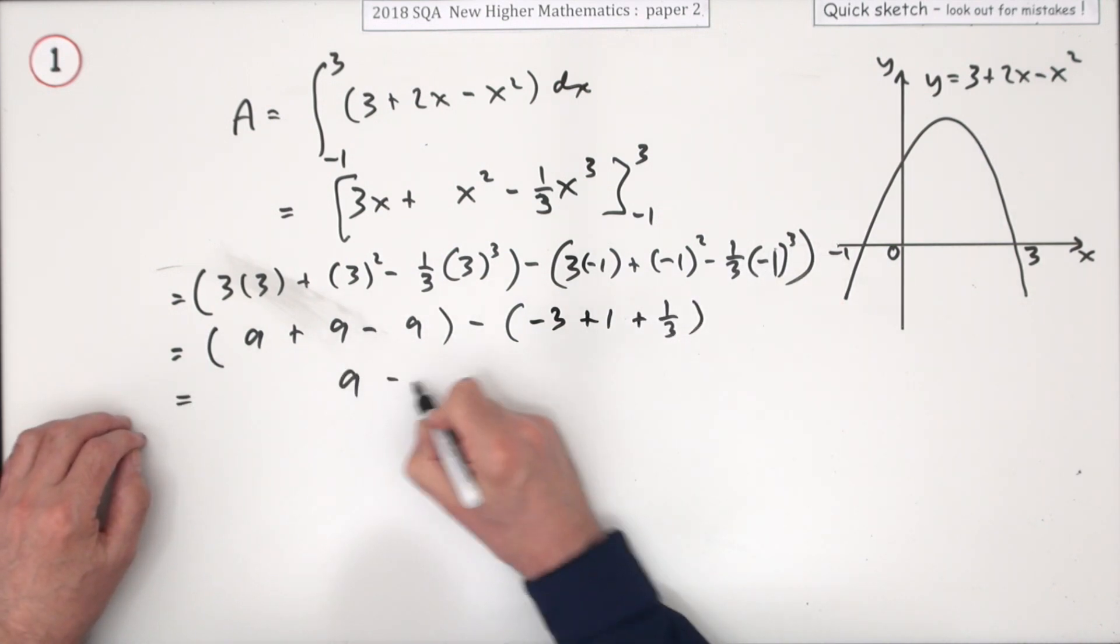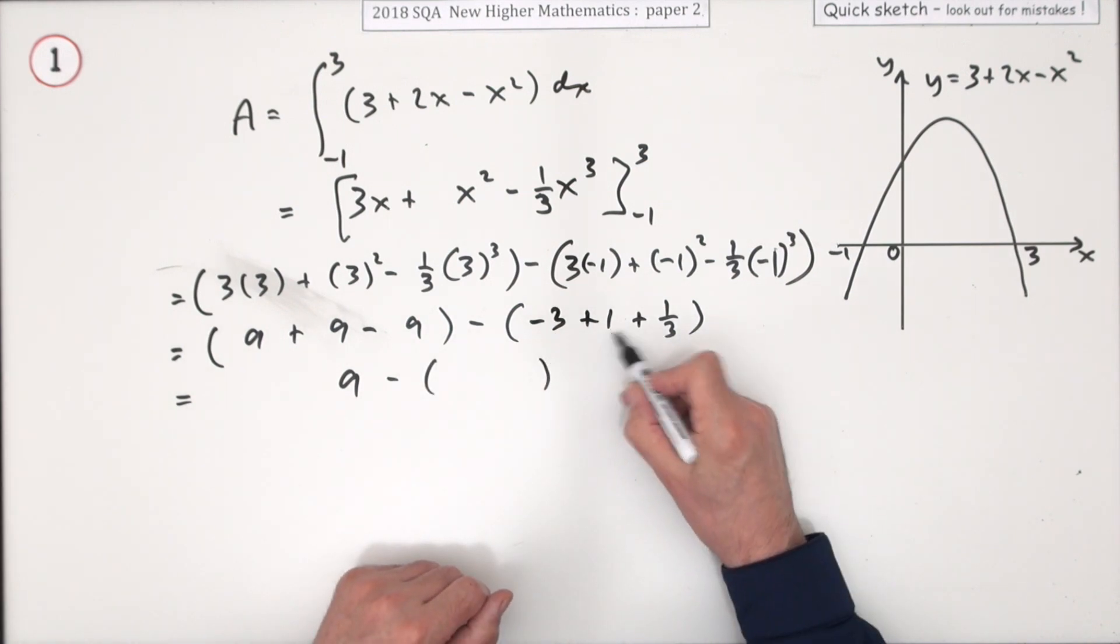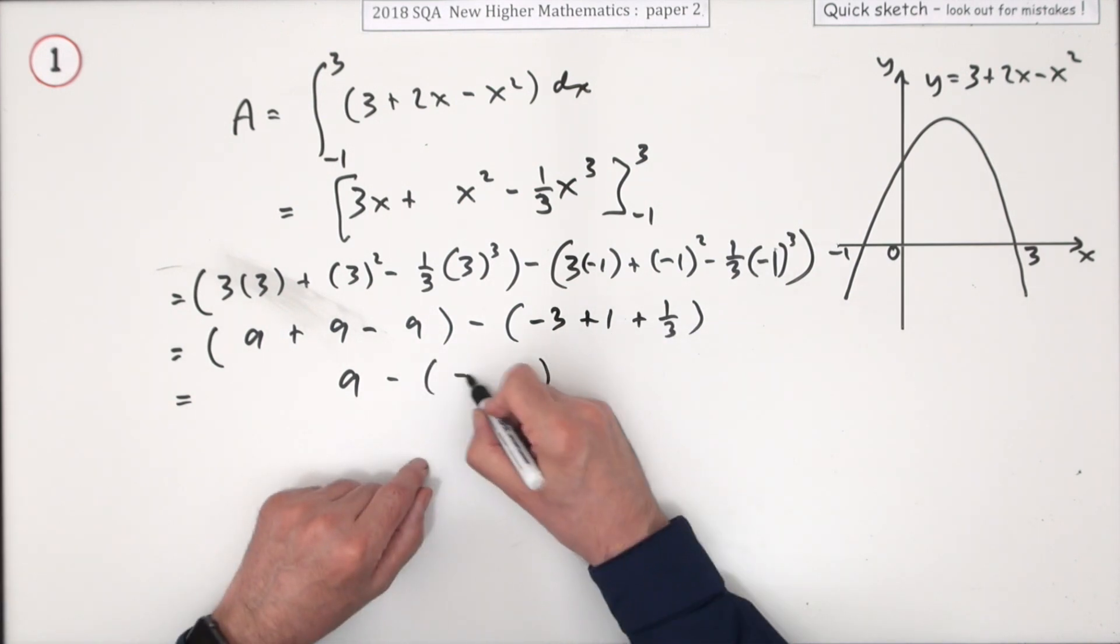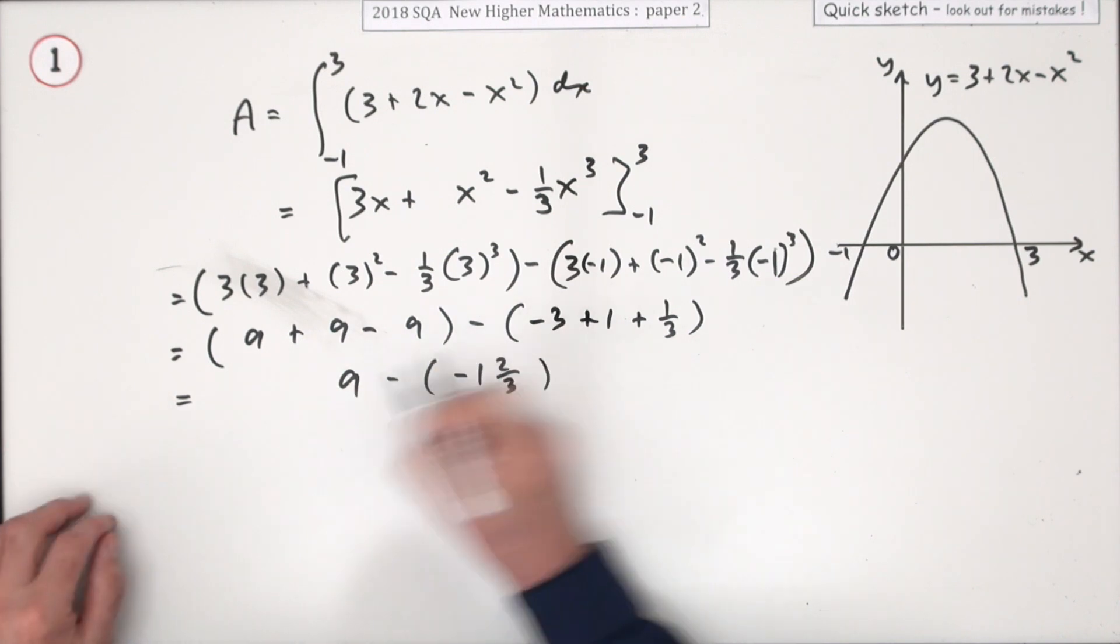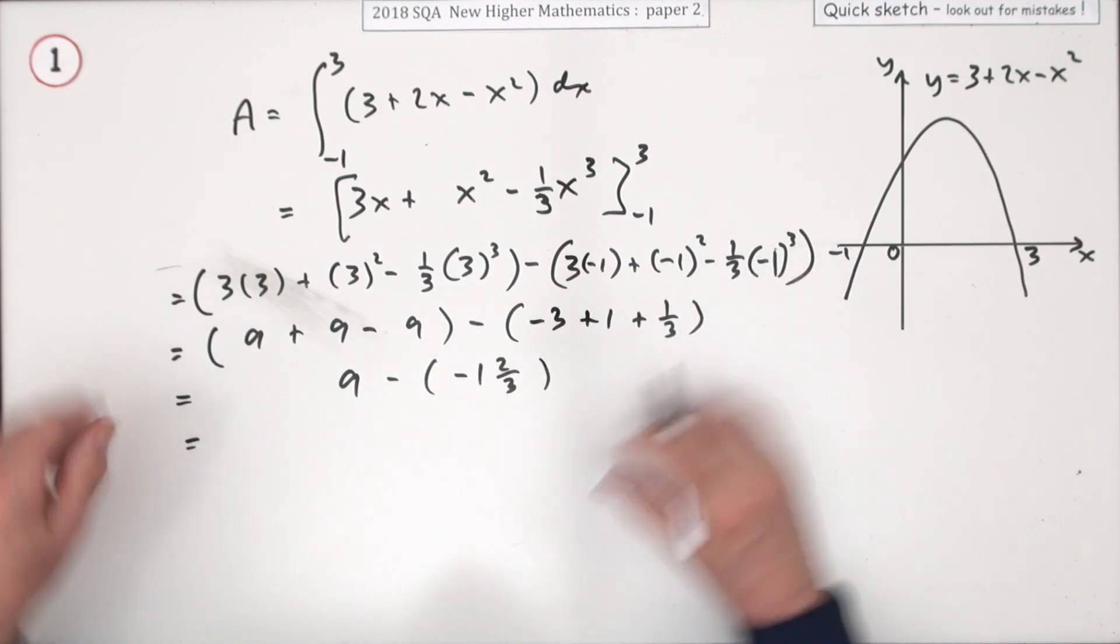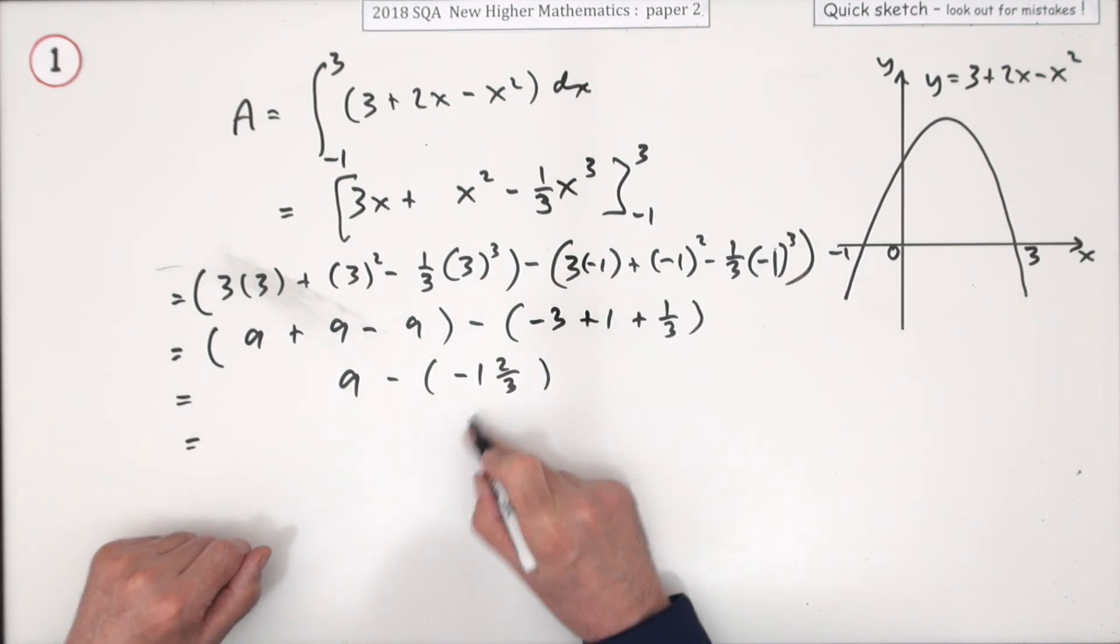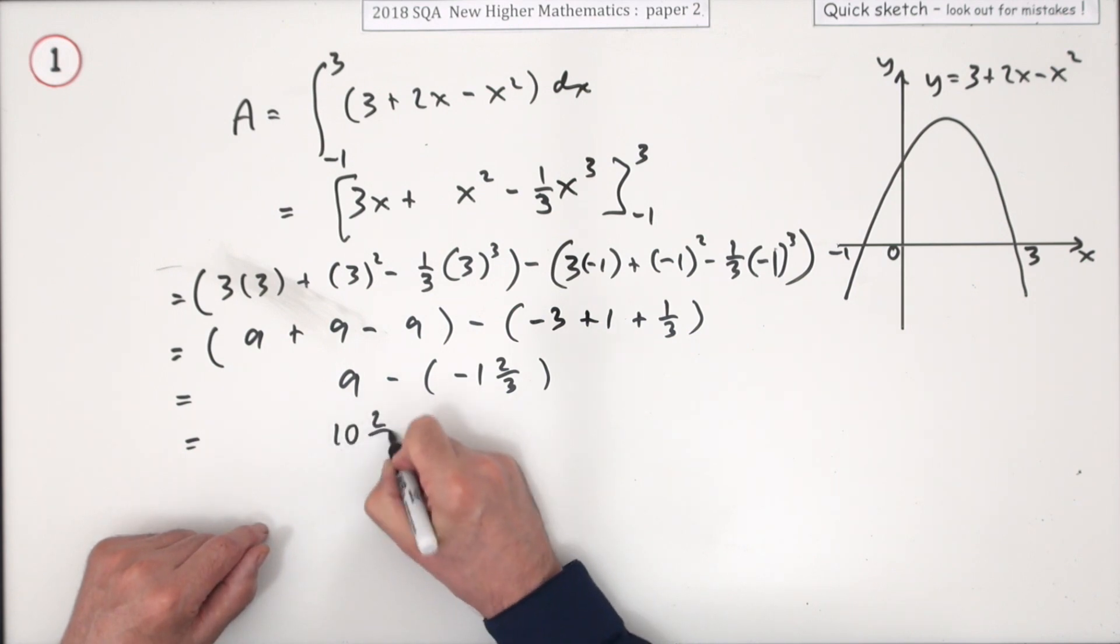So that part comes to 9. This part's still negative 1 and a third away from 3, so that's negative 1 and 2 thirds. You don't need to do this but this bit could all just be done in your calculator. So that's 9 plus that, so that's 10 and 2 thirds.